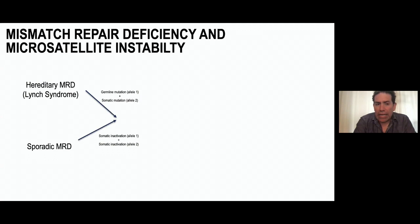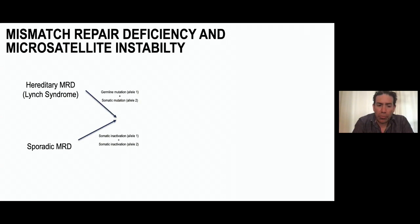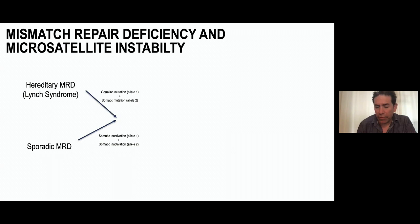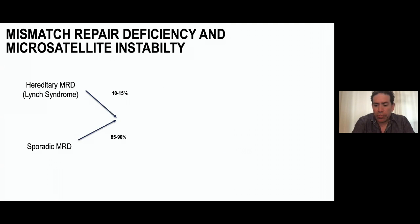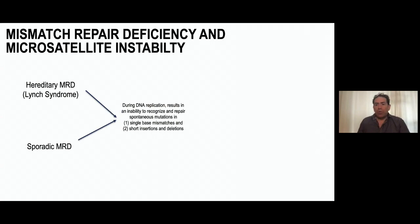There are two ways mismatch repair deficiency arises in humans: the hereditary form, Lynch syndrome, and a sporadic form. In Lynch syndrome, a germline mutation is carried from generation to generation, and a second mutation in the opposite allele leads to deficiency. In the sporadic form, both alleles are activated through somatic mutation, methylation, or LOH inactivation. The hereditary form represents about 10–15% of mismatch repair deficient tumors; the sporadic form accounts for 85–90%.